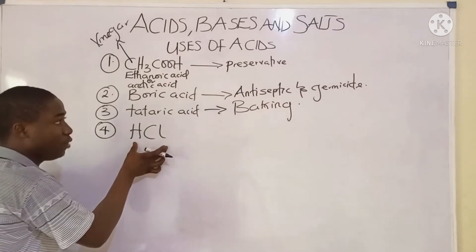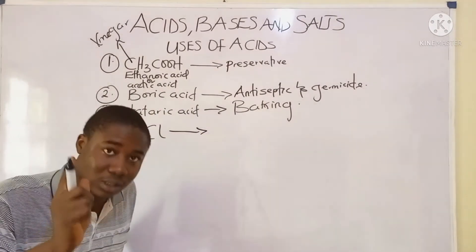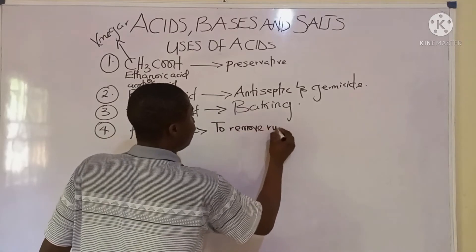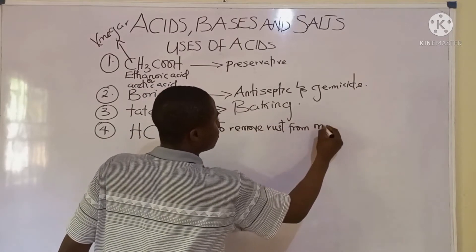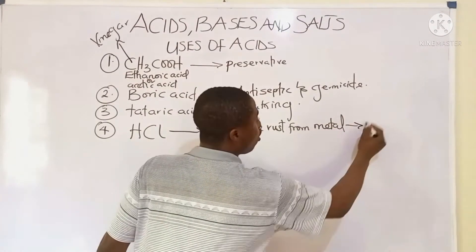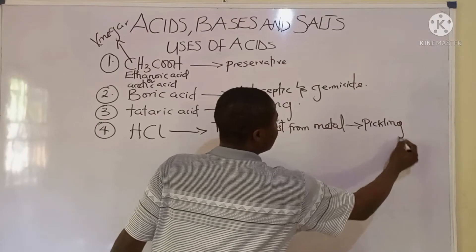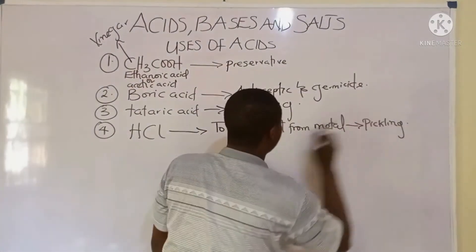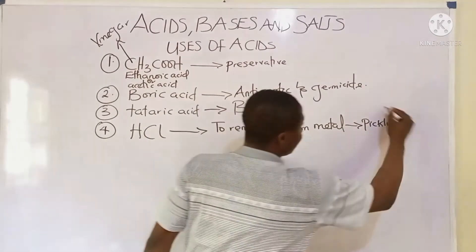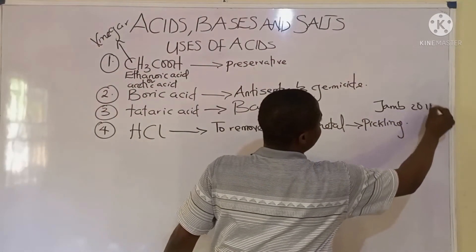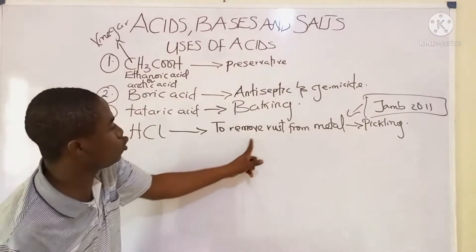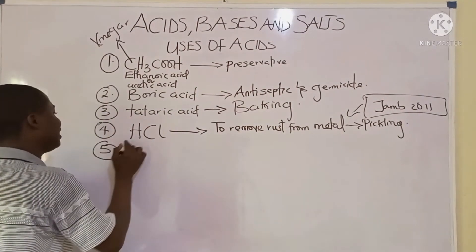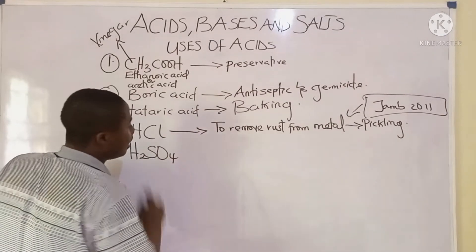Moving on to strong acids — HCl, hydrochloric acid. Hydrochloric acid is used to remove rust from metals. This process is called pickling. The process where acid is used to remove rust from metals is called pickling, and this was a JAMB past question from 2011. The best acid to be used for this is HCl.